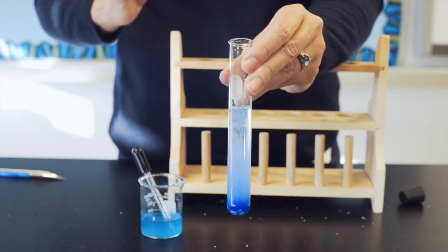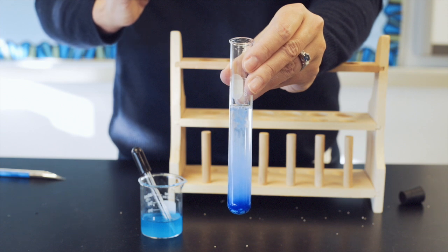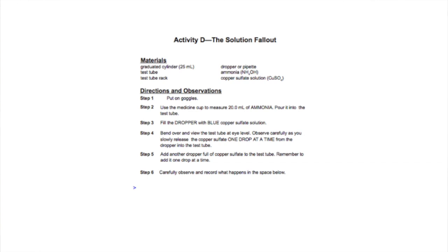This process is known as precipitation. Record your observations in the space on sheet five below step six.